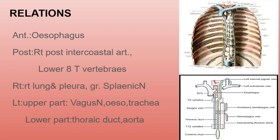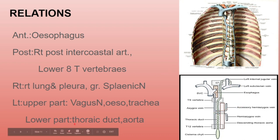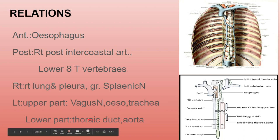For the relations of the azygous vein, refer to the diagram. Anteriorly, there is the esophagus. Posteriorly, there are the right posterior intercostal artery and the lower eight thoracic vertebrae (T5 to T12). On the right side are the right lung, pleura, and the greater splanchnic nerve. On the left side, the upper part relates to the vagus nerve, esophagus, and trachea — remembered by the mnemonic VOT — and the lower part relates to the thoracic duct and aorta.